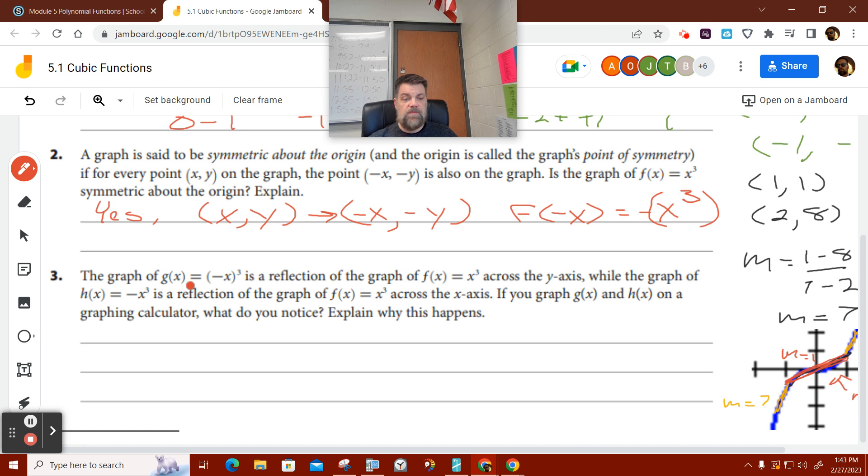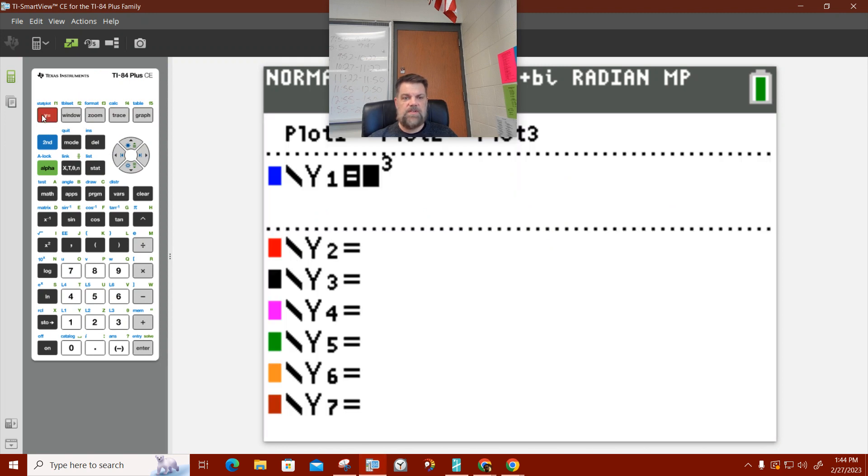Part three says the graph g of x is a reflection of the graph f of x cubed across the y-axis, while the graph h of x equals negative x cubed is a reflection of the graph f of x across the x-axis. If you graph g and h on a graphing calculator, what do you notice and explain why this happens? When's the bell ring? Is it 45? All right. So is it 45? It's 50. It's 50, right? Yeah, it's 50. We've got time.